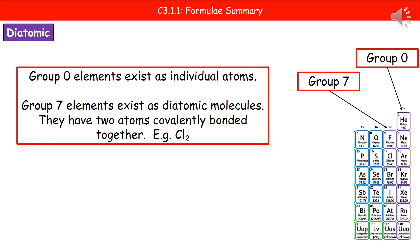Now considering the non-metal elements on the right-hand side of the periodic table: looking at group zero first — the noble gases — these exist as individual atoms, so their formulae are written as just He or Ne, with no numbers associated.